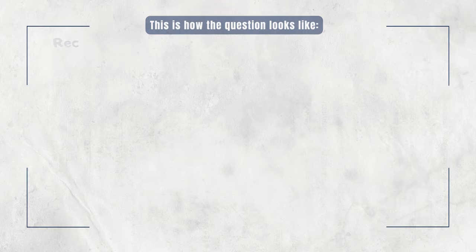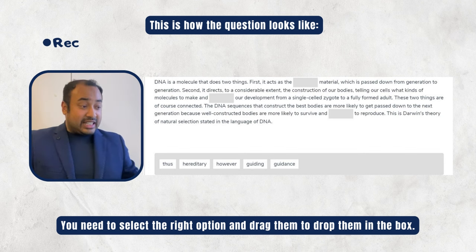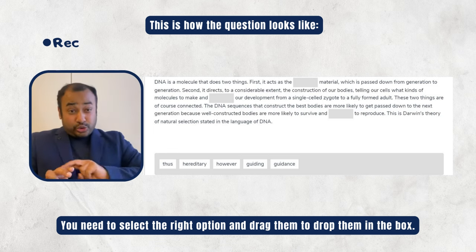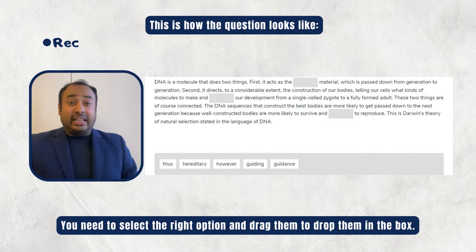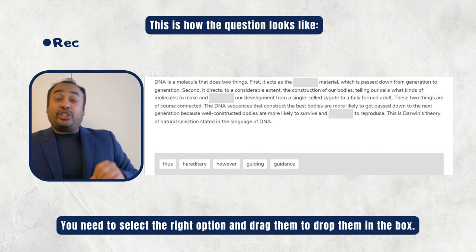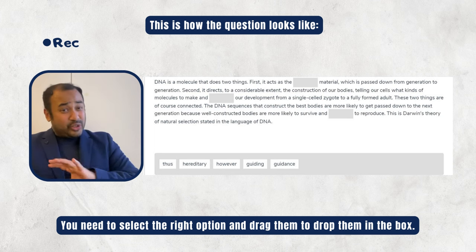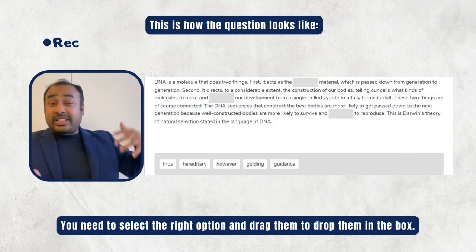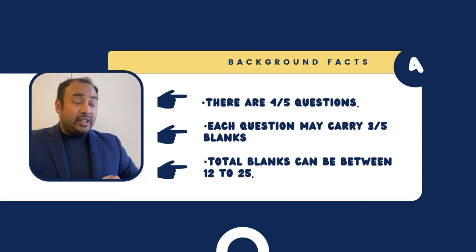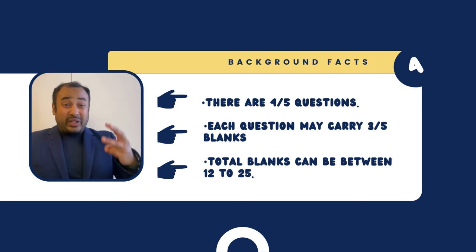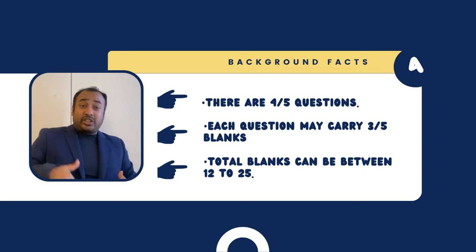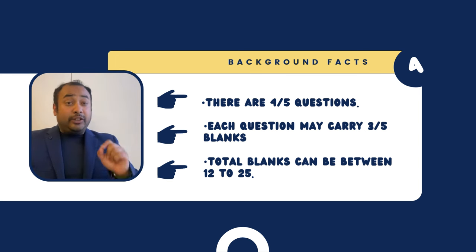Looking at your screen, you can see there are blanks, and there are word options at the bottom. Your job is to drag the words and put them in the blanks. It sounds easy, but the problem is you often choose the wrong ones and get no marks. You will get four or five of these questions in the PTE exam, with three to five blanks each — on average about 20 blanks total.